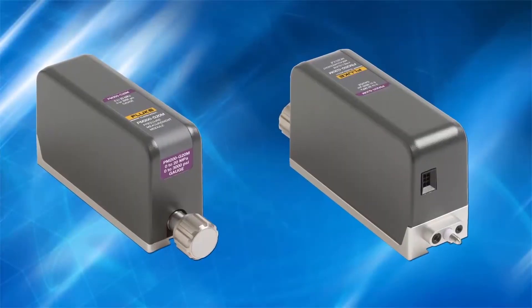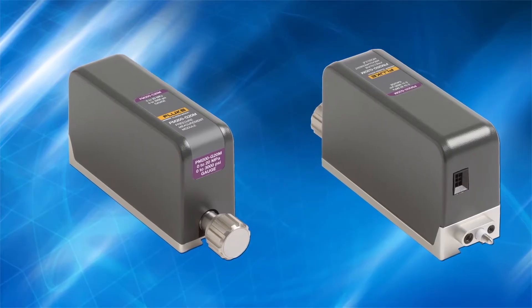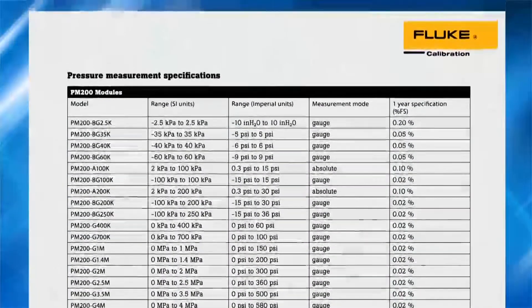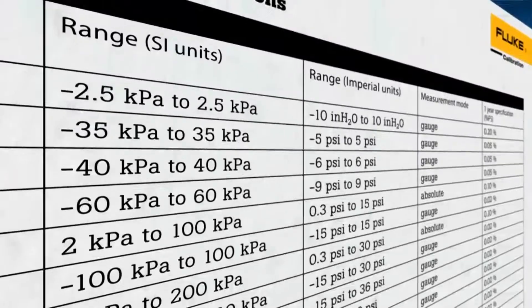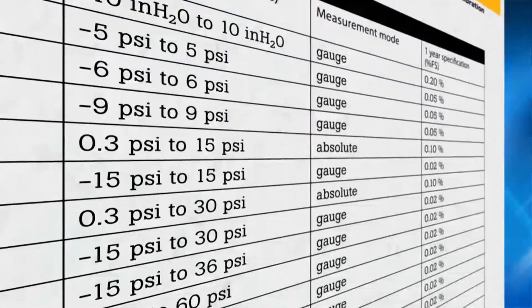The 2271A uses Fluke Calibration PM200 modules to measure pressure. With over 20 ranges to choose from, you can use the 2271A from vacuum to 20 MPa, or 3000 psi.